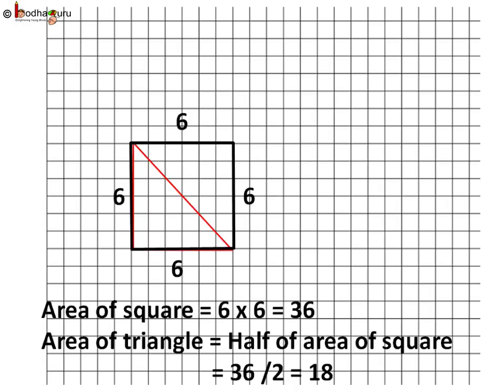The triangle is half of the square, means the triangle's area is half of the square's area, which is equal to 36 by 2, which is 18. To put it more simply, if we divide the big square into two triangles by connecting the two corners, each triangle would be half of the whole square.